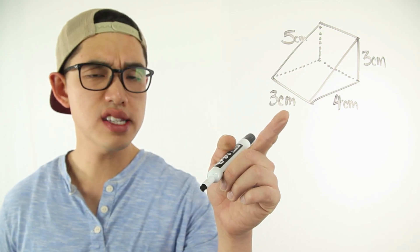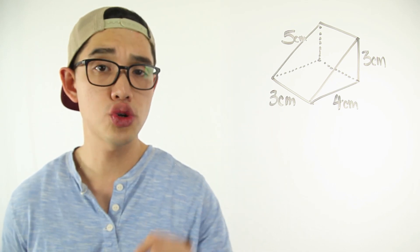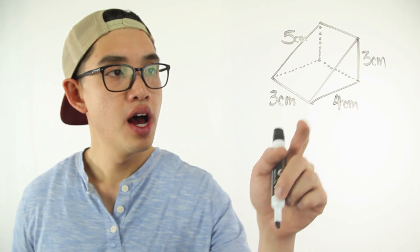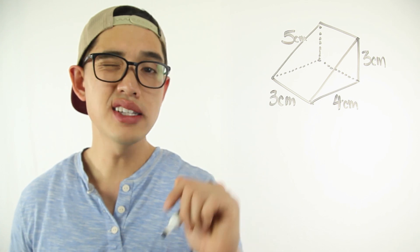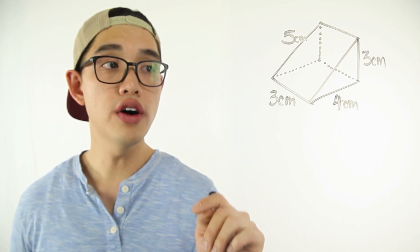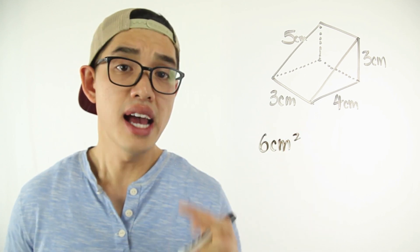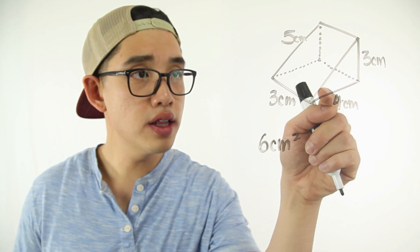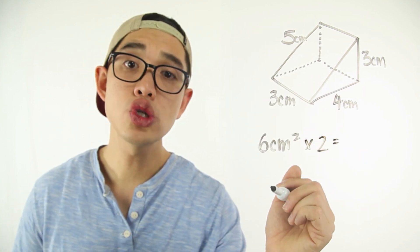Let's do one last problem. I have this triangular prism right here — it's kind of like a block of cheese. I want you guys to pause the video and try to figure out the surface area of this triangular prism. If I take a look at this triangular piece right here, three times four is going to give me 12. But since it's a triangle, I'm going to have to divide it by two. So 12 divided by two is going to be six centimeters squared. And since there are two of these triangular pieces — one in the front and one in the back — I'm going to multiply it by two, which gives me 12 centimeters squared.